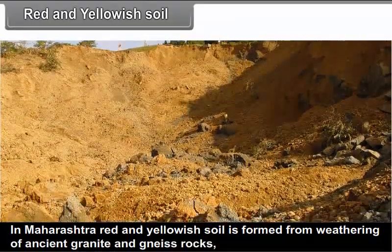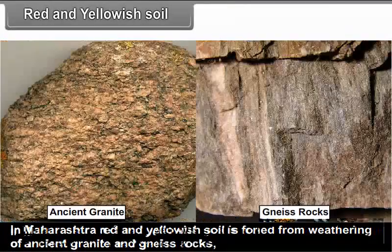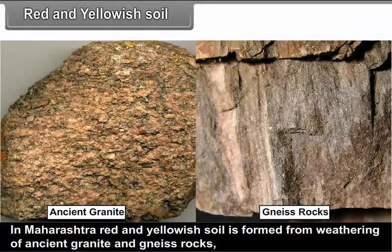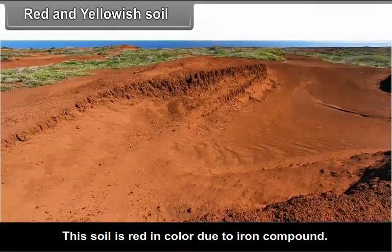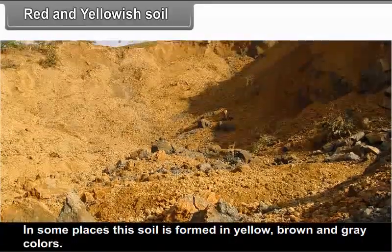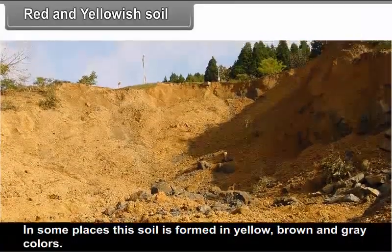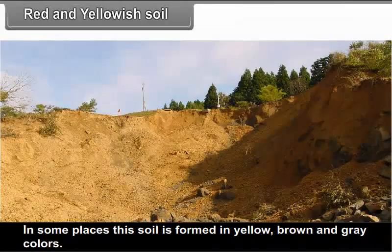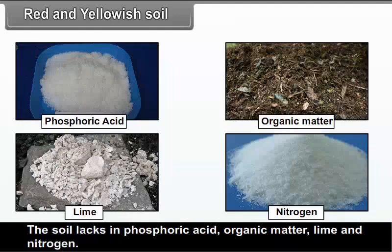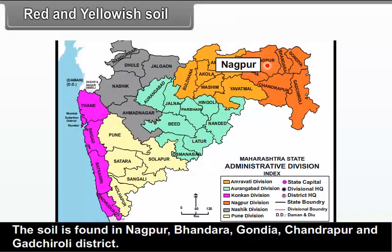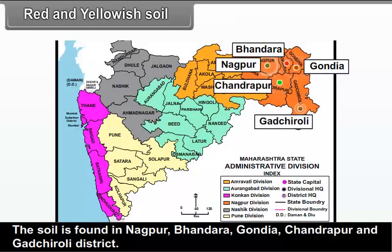Red and yellowish soil: In Maharashtra, red and yellowish soil is formed from weathering of ancient granite and gneiss rocks. This soil is red in color due to iron compounds, and in some places it forms in yellow, brown and grey colors. The soil lacks phosphoric acid, organic matter, lime and nitrogen. It is found in Nagpur, Bhandara, Gondiya, Chandrapur and Gadchiroli districts. Crops like bajra, groundnut, potato and rice grow well in this soil.